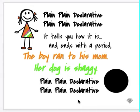Plain, plain declarative, plain, plain declarative. It tells you how it is and ends with a period. The boy ran to his mom. Her dog is shaggy. Plain, plain declarative, plain, plain declarative. So this song tells you about the declarative sentence.